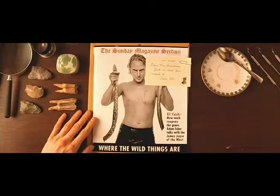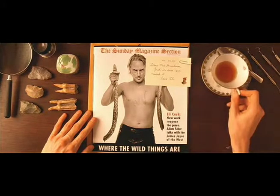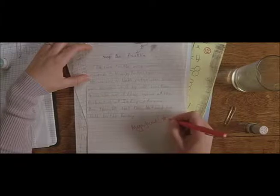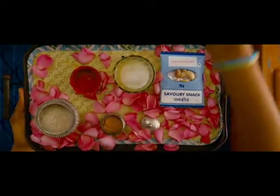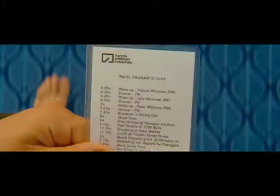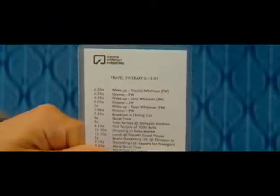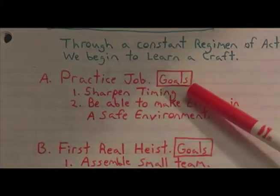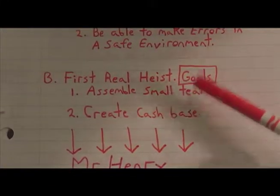Anderson is also known for his famous over-the-head POV shots, where the viewer gets to see objects that would normally be off-screen. In the Darjeeling Limited, this is used a number of times to show things the characters are using or looking at, like the trip itinerary. Similarly, in Bottle Rocket, this is also used to show Dignan's 75-year plan.